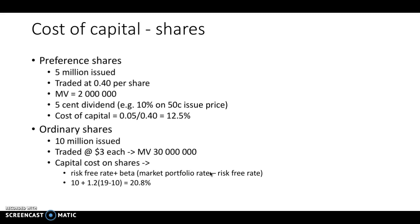Ordinary shares work in a similar way. There's 10 million issued. They're currently traded at $3 each, so there's a market value of 30 million. The cost of capital on shares, we're going to use the CAPM model. So it's the risk-free rate plus beta times the market portfolio rate minus the risk-free rate, which comes out to 20.8%. If the CAPM is confusing to you, let me know and I'll do another video. It's actually quite a simple concept.